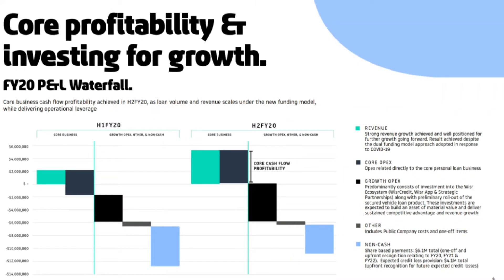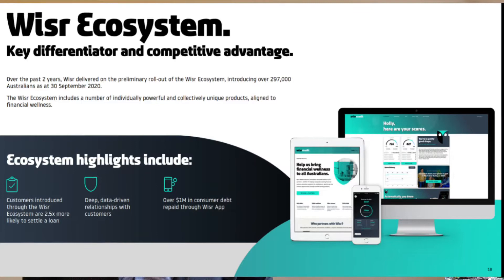If I look at their October investor presentation, I see that they have just achieved core business cash flow profitability in the second half of the 2020 financial year. They have something called growth operating expenses, which predominantly consists of investments into the Weiser ecosystem, and that is the Weiser Credit, Weiser App and strategy partnerships along with preliminary rollout of the Secured Vehicle Loan product.